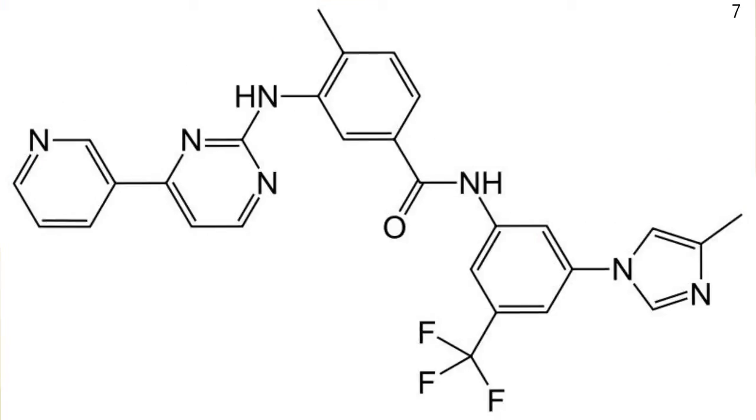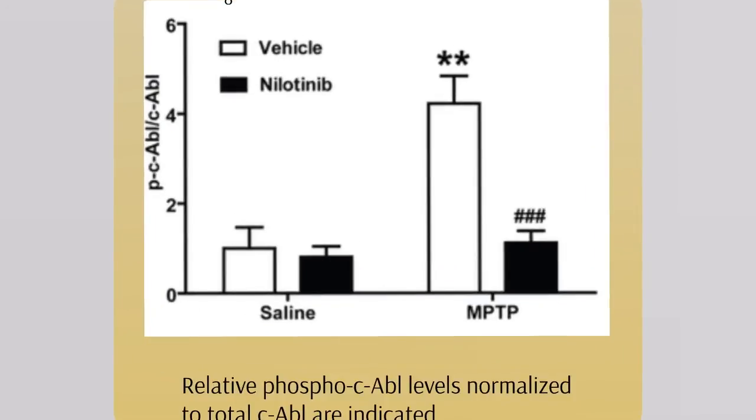Nilotinib is a tyrosine kinase inhibitor capable of crossing the blood-brain barrier. We can see from this chart that fewer C-ABLs are phosphorylated, and therefore fewer are active when nilotinib is applied to a Parkinson's disease mouse model.